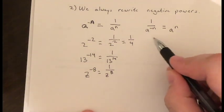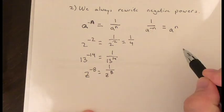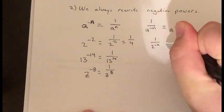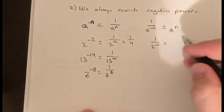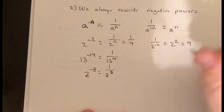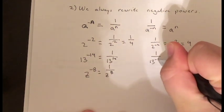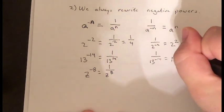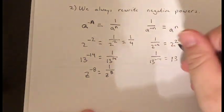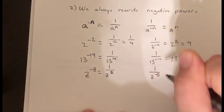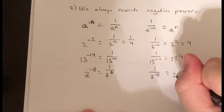The opposite is also true. If you have a fraction where the exponent is negative in the denominator, you can rewrite it as a regular number. For example, one over two to the negative two is just two squared, or four. Similarly, one over 13 to the negative 14 becomes 13 to the 14th, and one over z to the negative eight becomes z to the positive eight.